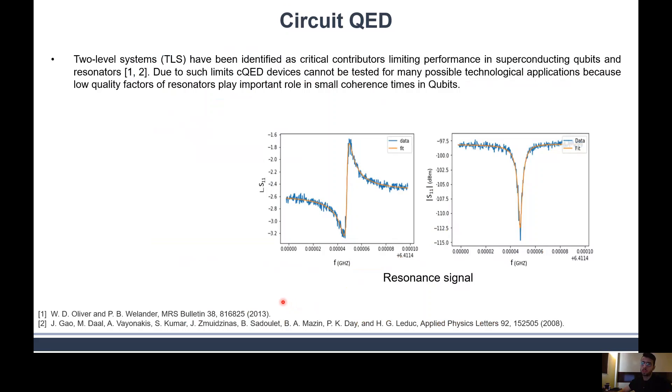However, qubit and CPW resonators and other superconducting quantum devices cannot be used for many possible applications because of defects and contaminations in the device. These defects are known to be two-level systems, or TLS, oxide defects that grow naturally in the system.